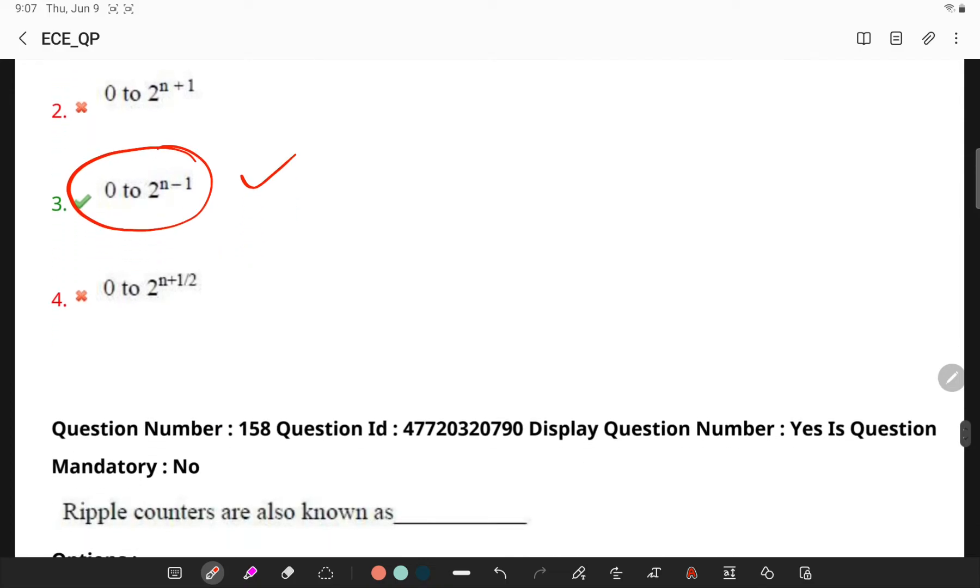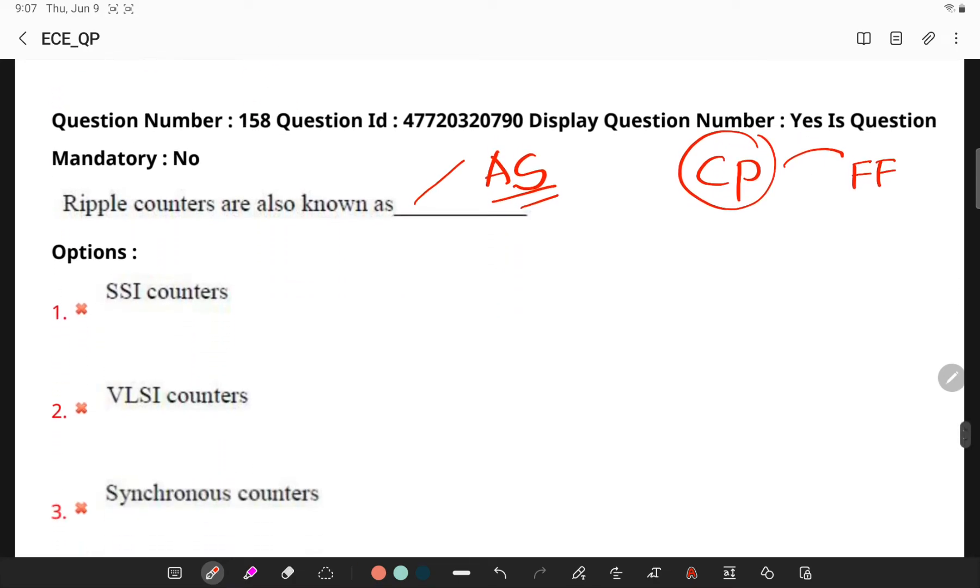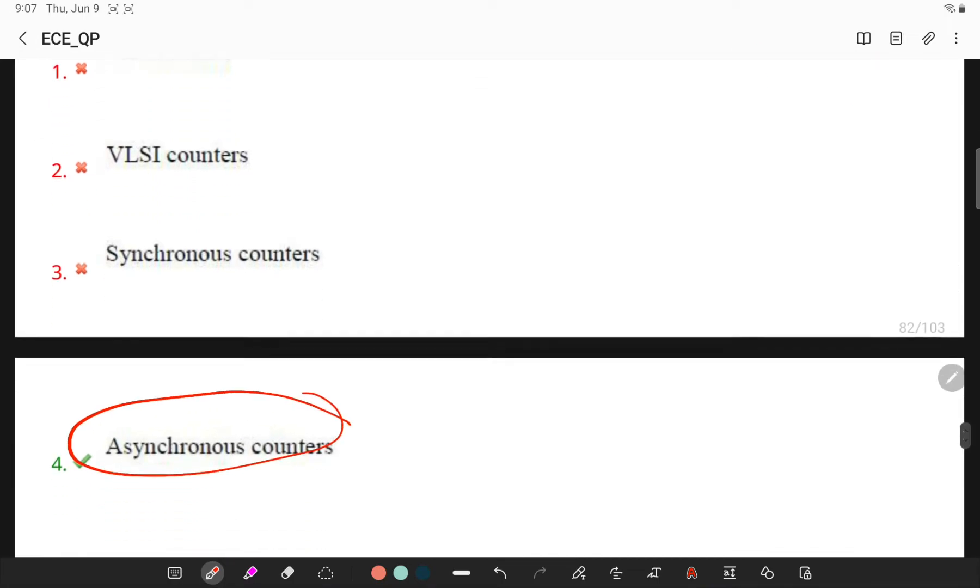Next, ripple counters are also known as asynchronous counters because of the way the clock pulse ripples its way through the flip-flops. So, here, it is asynchronous counter.